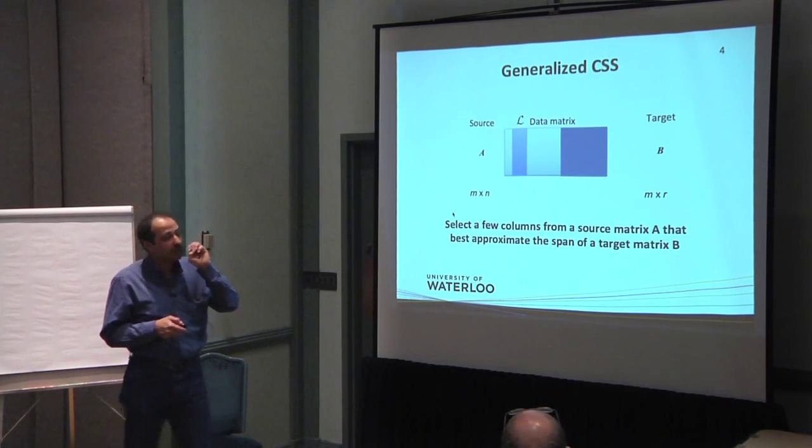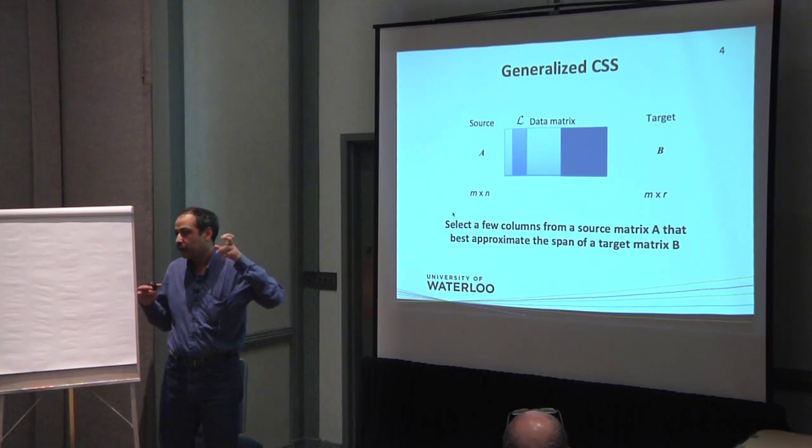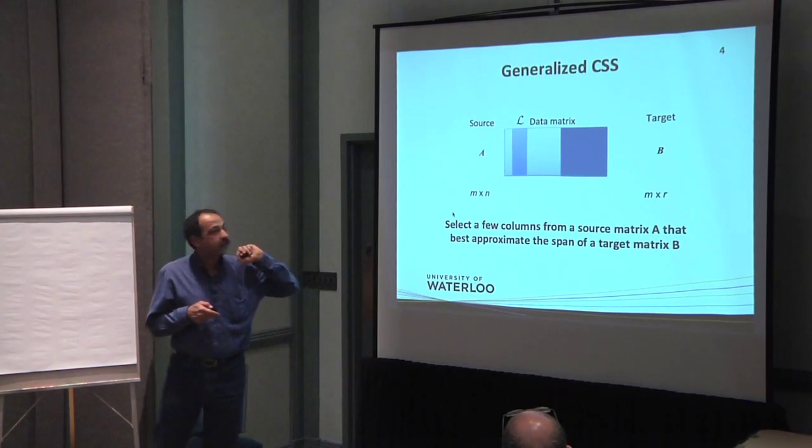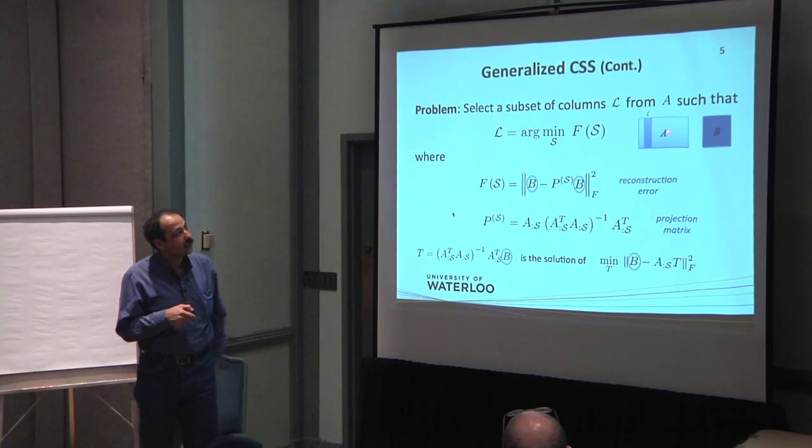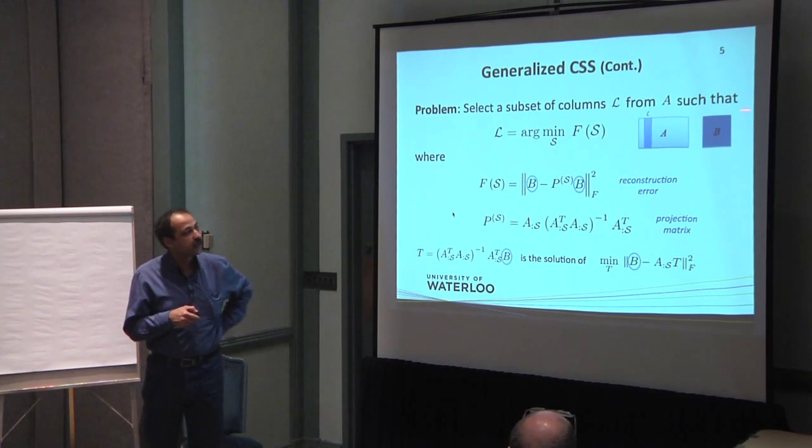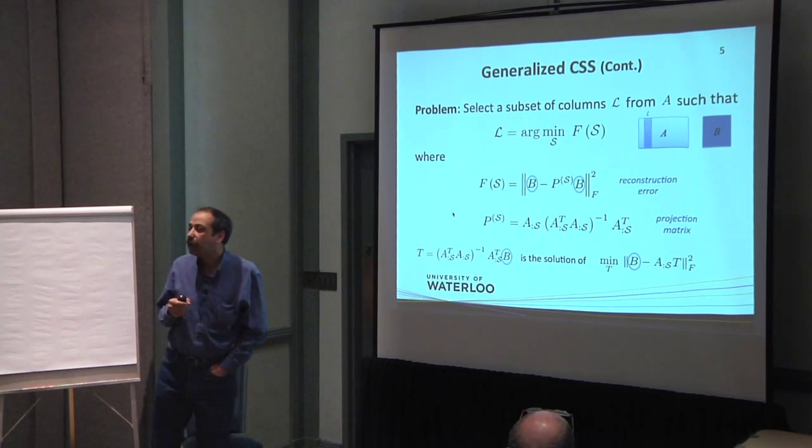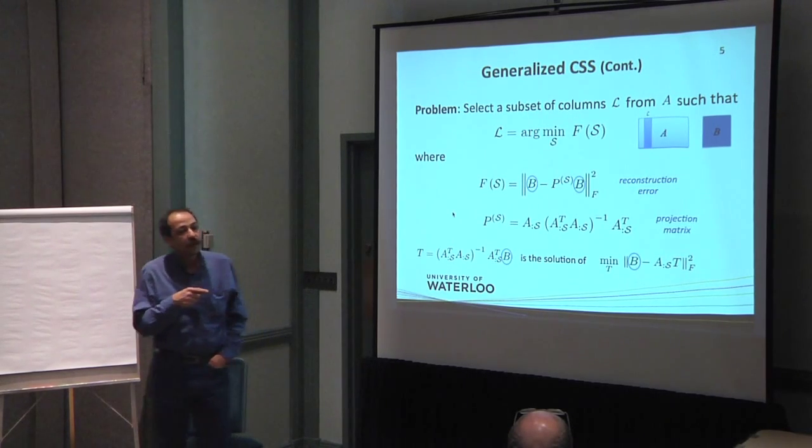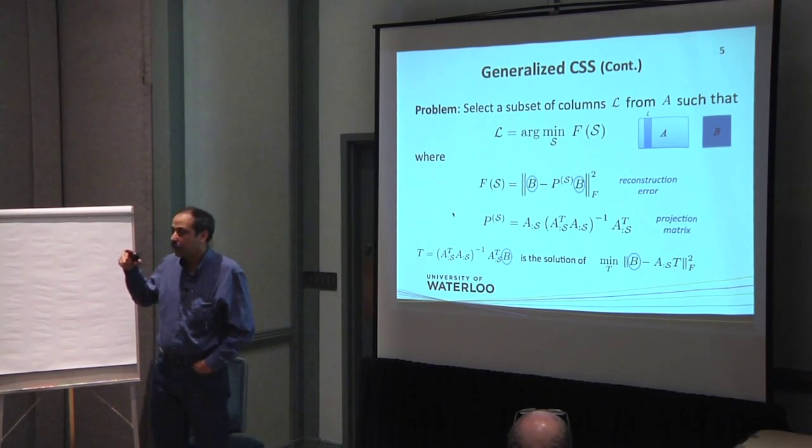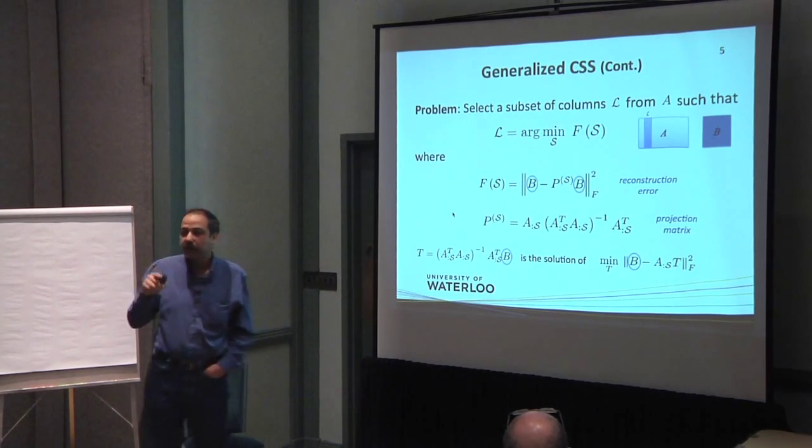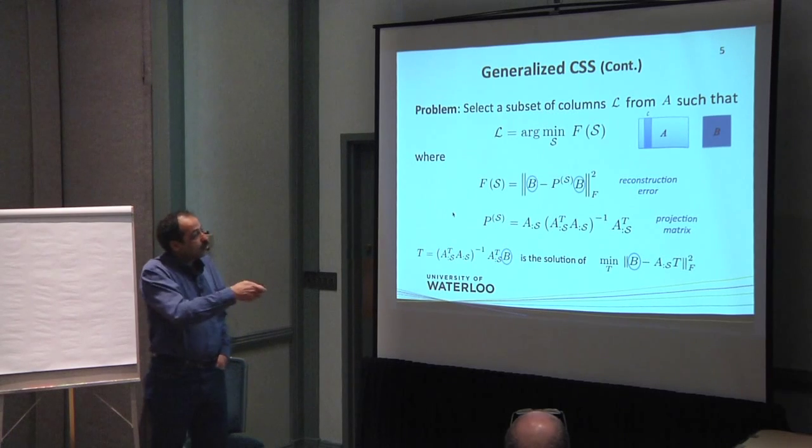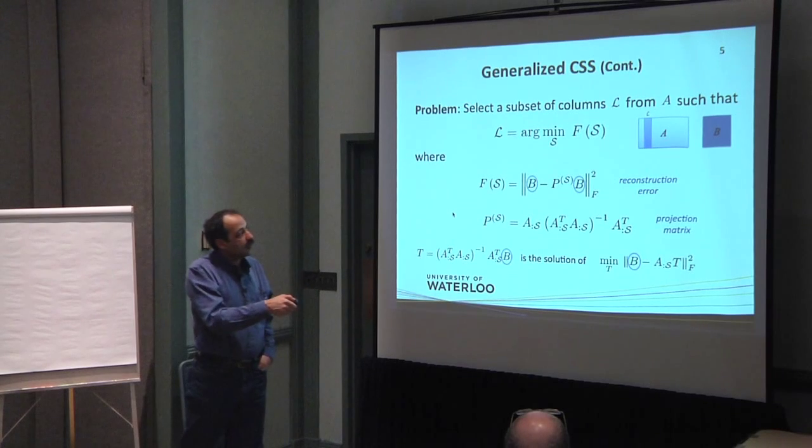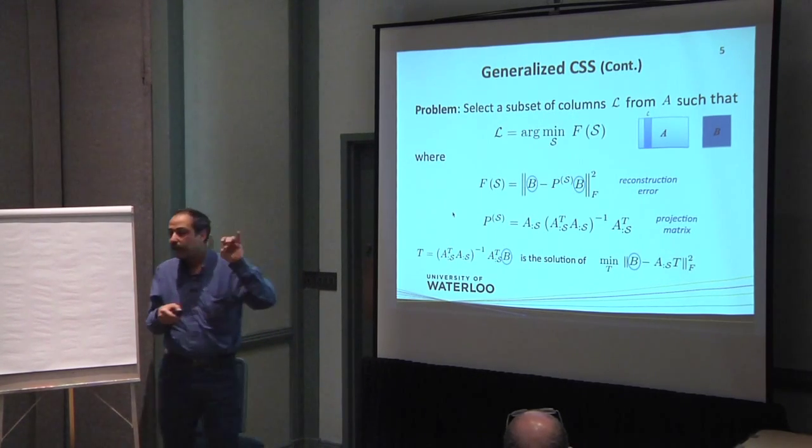But before I talk about the solution, let me tell you about the generalized column subset selection. So far it was column subset selection. In generalized column subset selection, we have basically two matrices, a matrix as a source matrix A and another matrix as a target matrix B. And we are trying to choose a subset of columns of A which span B, the target matrix, not the matrix itself, but another matrix. So the projection matrix P has been built based on a subset of A but is going to span another matrix, a different matrix.